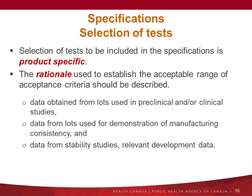The selection of tests when you define your spec is product specific. Rationale — in bold because we like rationale — everything should be justified. Why do you propose to use that test with this acceptable range? What did you use to define that acceptable range? It should come from data obtained from lots used in preclinical and clinical data, lots used to demonstrate consistency, stability studies, and relevant development data.